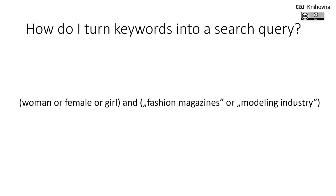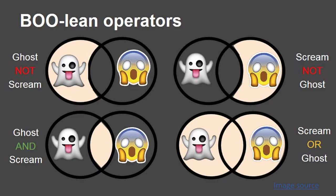Once you have your keywords, you have to turn them into a search query. You can create your search query — or search request if you want — by combining your keywords using Boolean operators. We have three basic Boolean operators: AND, OR, and NOT. Let's look at what they mean. We have three basic Boolean operators: AND, OR, and NOT.